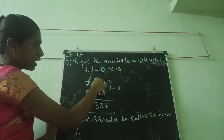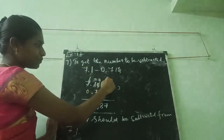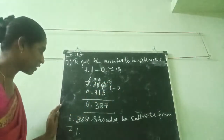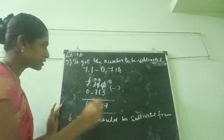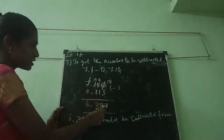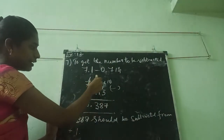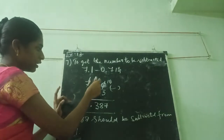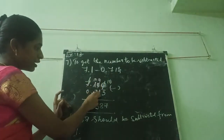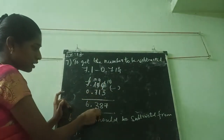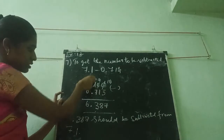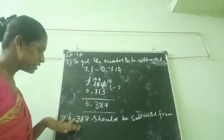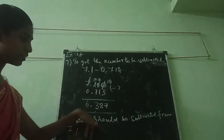I am minusing — carrying here: 10 minus 3 is 7. Next: 9 minus 1 is 8. Then carry 1, putting 10 — 10 minus 7 is 3. Then 6 minus 0 is 6. That means 6.387 should be subtracted from 7.1 to get 0.713.